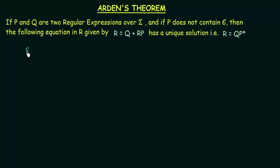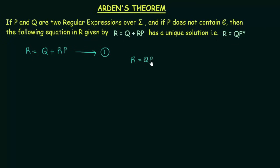First, we will take the equation r = q + rp. Let me call it equation number one, and we are going to prove that r = qp* is a solution to that. What I will do is replace r with qp*. So we get qp* = q + qp* · p.